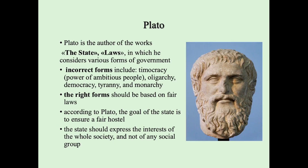The next is Plato. We will discuss Greek philosophers and their political ideas. Plato was a Greek philosopher, the author of the works The State and Laws, in which he considers various forms of government. Plato divided governments into two forms: incorrect forms and right or correct forms. According to Plato, incorrect forms are democracy, power of ambitious people, oligarchy, tyranny, and monarchy.